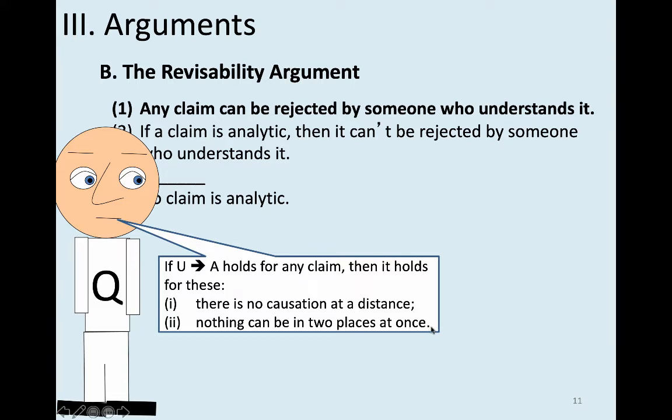And the claim 'nothing can be in two places at once' — we're not talking about parts of things. Obviously your head can be in one spot and your feet in another. We're talking about entire objects. The claim is: no entire object can be entirely present in two distinct places. So I can't have my entire body in the classroom and my entire body at home on my couch at the same time.